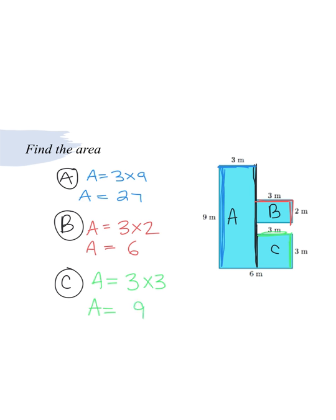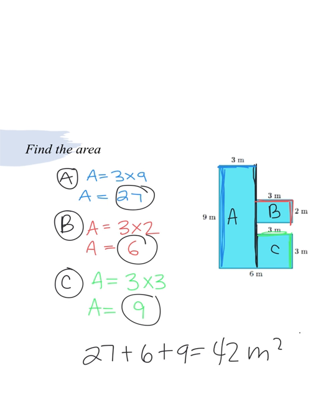Okay. And then the last step would be to add all those up together to find the total area. So we're going to be doing 27 plus 6 plus 9. And 27 plus 6 plus 9 is going to give us 42 meters squared.